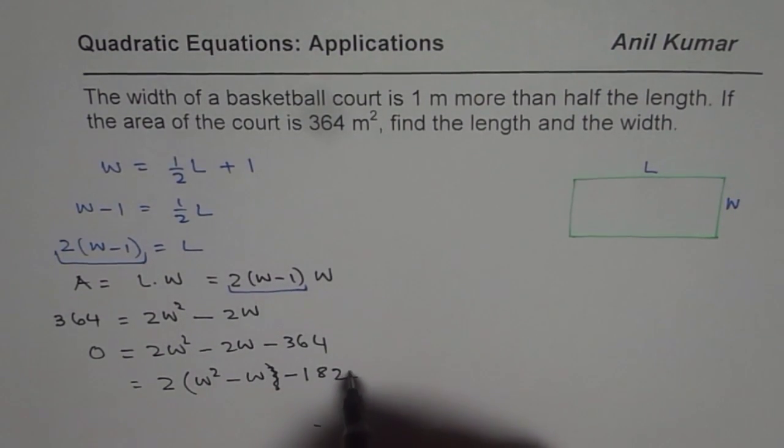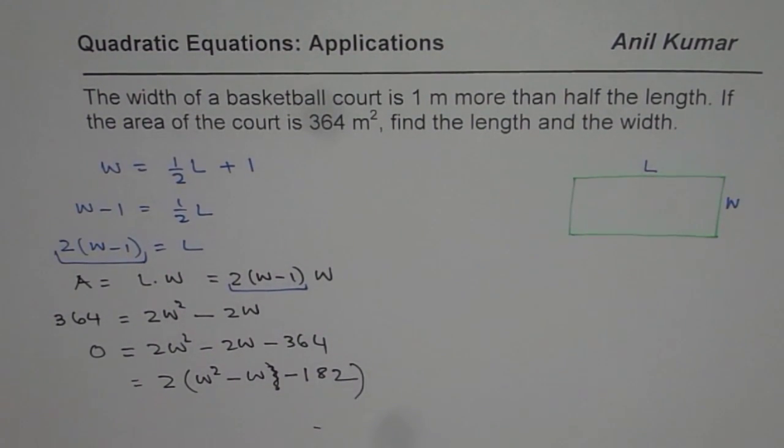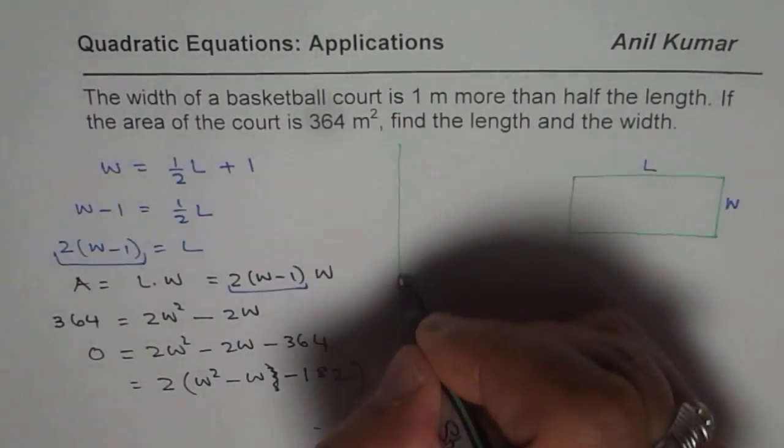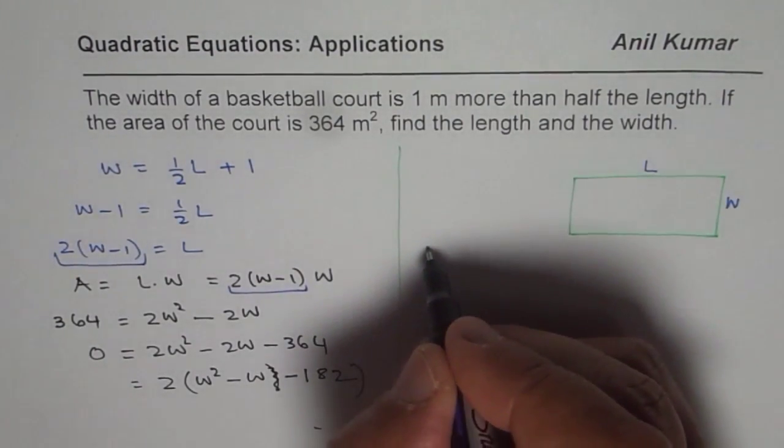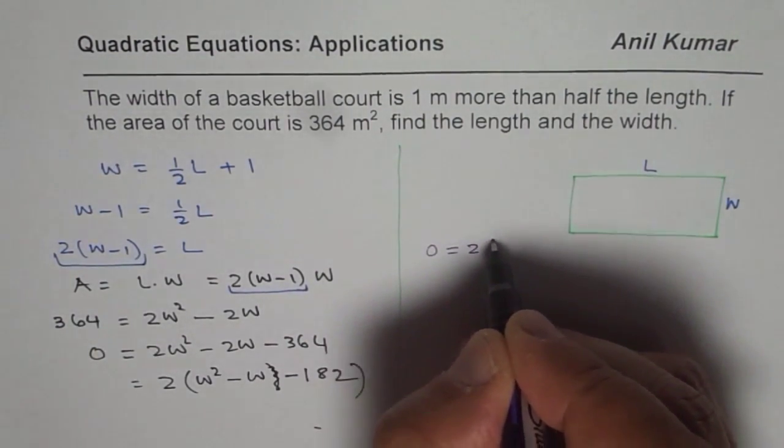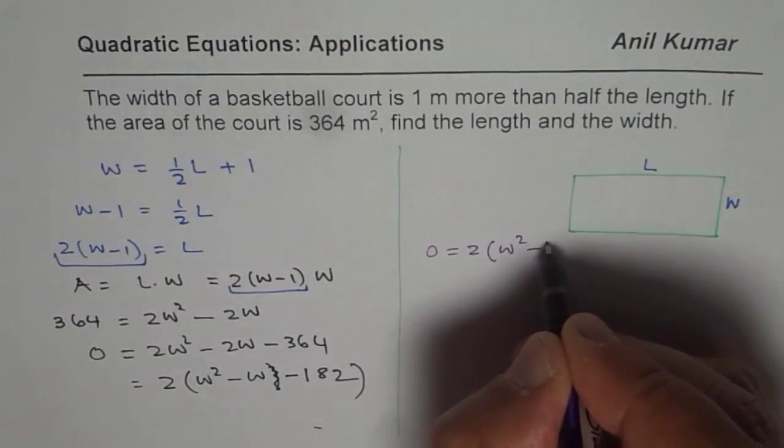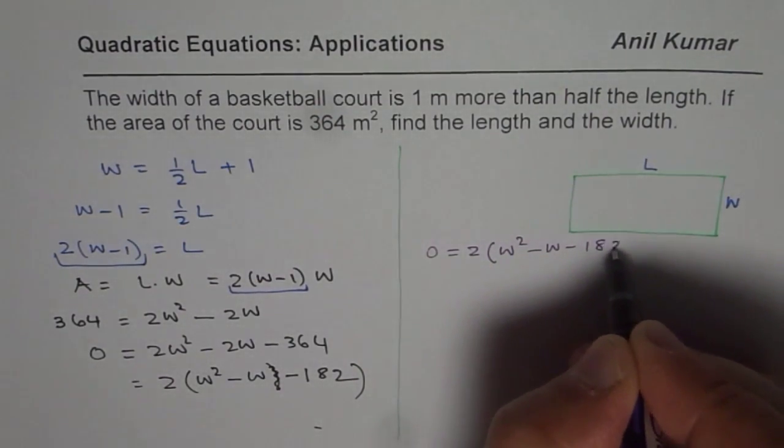So we get our quadratic equation, which we need to simplify to get the value of width. So the quadratic equation for us is 0 equals 2 times (W squared minus W minus 182).